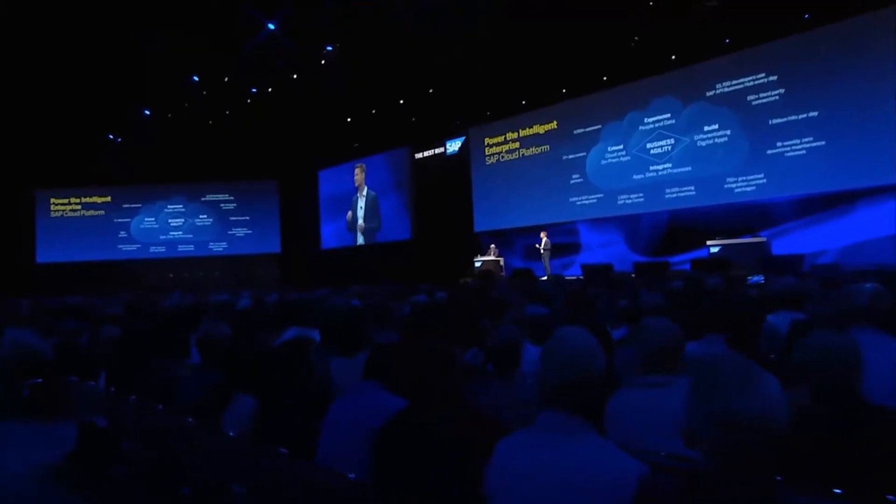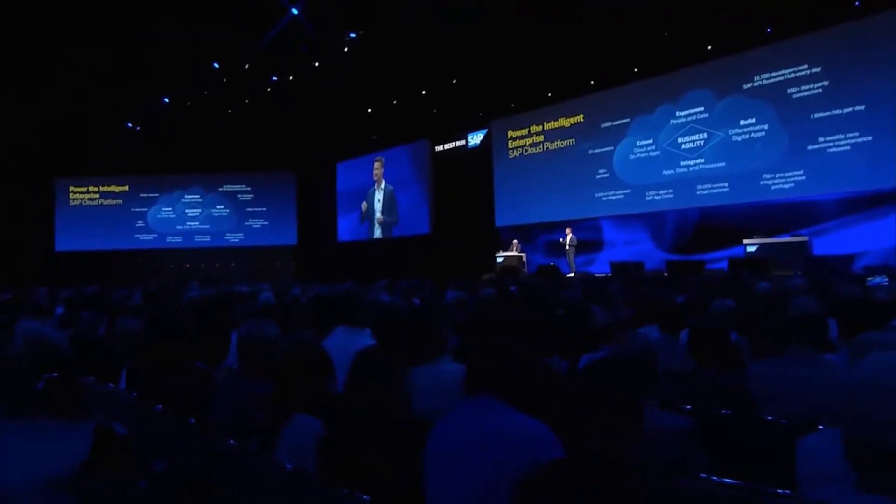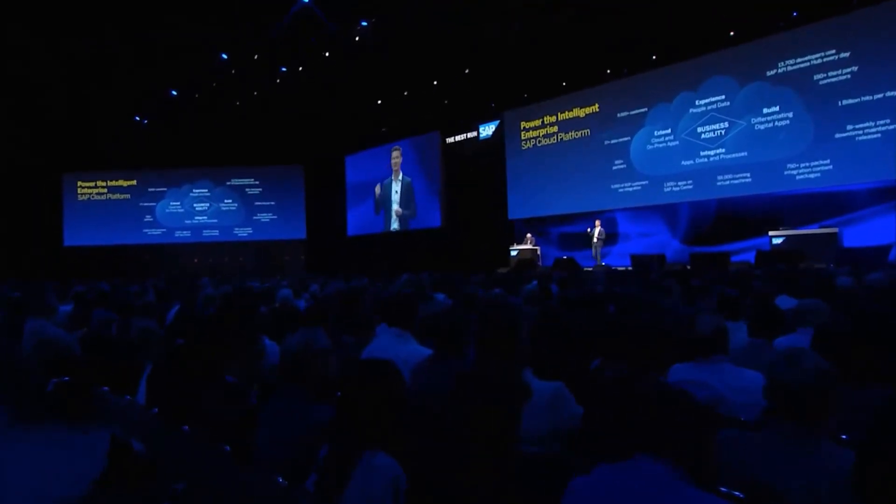SAP Cloud Platform has also fundamentally changed how we deliver innovations at SAP. In the old days we had long release cycles and even longer adoption cycles. With SAP Cloud Platform, we are now delivering full releases every two weeks in a zero-downtime fashion into our 40 public cloud SAP Cloud Platform landscapes. We provide several hundred updates every year without causing any downtime — that's the speed at which we can bring innovation to you on an ongoing basis.